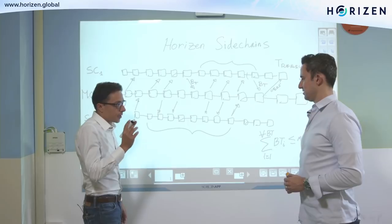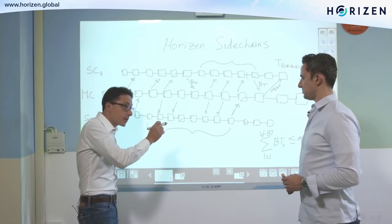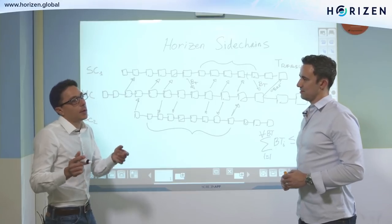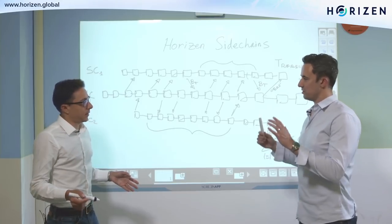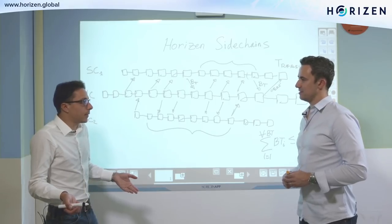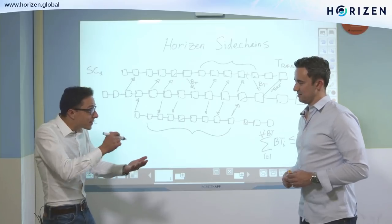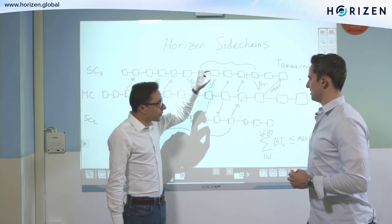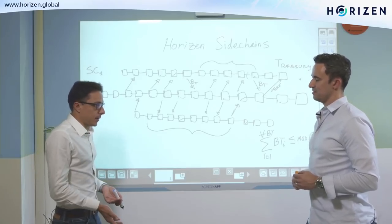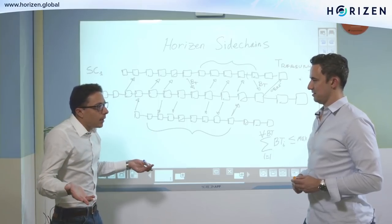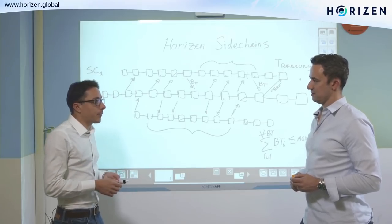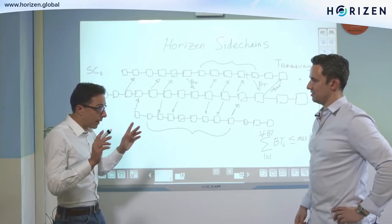Here is the tricky part: the nodes on the main chain can only verify if the certificate has been signed by the right set of certifiers — that's the only logic maintained on the mainchain. But nodes do not know if the payments signed by that set of certifiers actually meet the sidechain criteria. So initially, the mainchain just accepts it. How do we guarantee that the certifiers signed a correct backward transfer? We cannot guarantee it directly. But here is what we do.